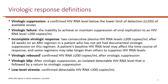Virologic rebound is when a patient has achieved virologic suppression but then the viral load becomes greater than 200 copies per mL again. A virologic blip is when, after achieving suppression, there is a single isolated detectable RNA level and then the patient returns to suppression. Low-level viremia is when the virus is detected at greater than 50 but less than 200 copies per mL.